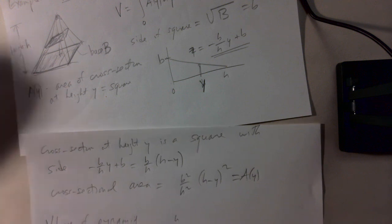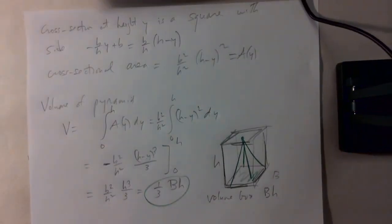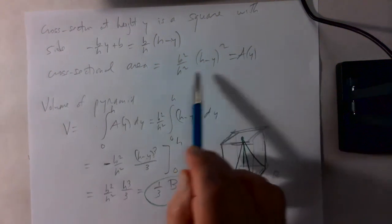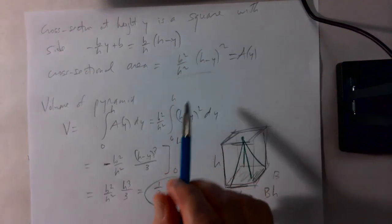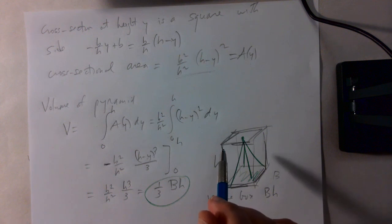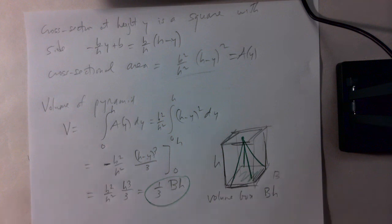This is our introduction to volumes. For a pyramid with base area B and height h, the cross-sectional area A(y) integrates to give volume (1/3)Bh — one third the volume of the enclosing box. We'll have homework problems to practice this method.